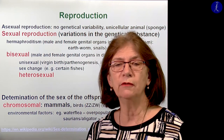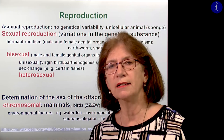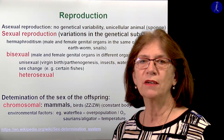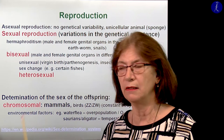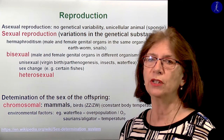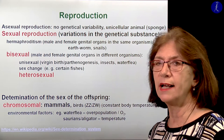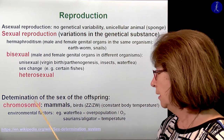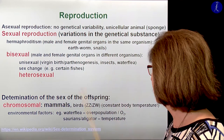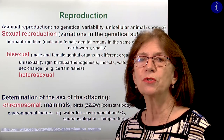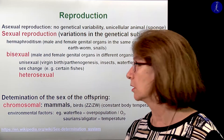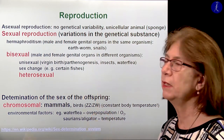This slide contains background information that we will not ask you in the exam. I would like to give you some imagination of where humans stand in the living world. First of all, there is asexual reproduction, which gives no genetical variability — it happens in unicellular animals like, for example, the sponge. The other way of reproduction is sexual reproduction, which gives variation in the genetic substance, but here there are also more possibilities. There may be so-called hermaphrodites, where male and female genital organs are in the same organism, like for example the earthworm and snails.